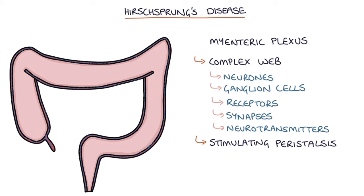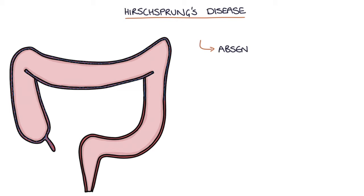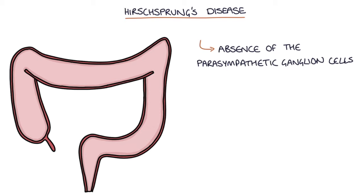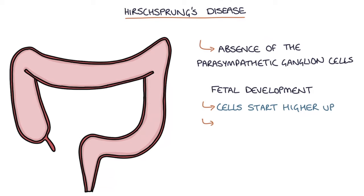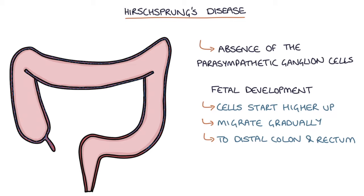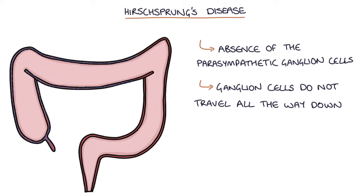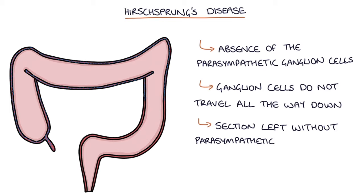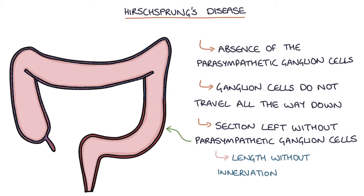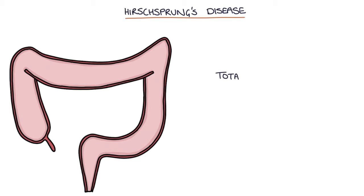The key pathophysiology in Hirschsprung's disease is the absence of the parasympathetic ganglion cells. During fetal development, these cells start higher up in the gastrointestinal tract and migrate gradually down to the distal colon and rectum. Hirschsprung's disease occurs when the parasympathetic ganglion cells do not travel all the way down the colon, leaving a section at the end without these cells. The length of the colon without innervation varies between patients, and when the entire colon is affected, this is called total colonic aganglionosis.